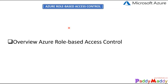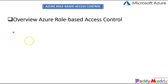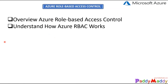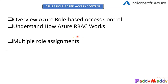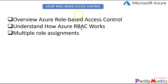To begin with, we will be looking into an overview of Azure role-based access control — what it is and what you can do with it — followed by understanding how Azure RBAC works: security principles, role definitions, and scopes. We will also look into how best we can assign multiple assignments — let's say you assign more than one role, what would happen and what will be effective.